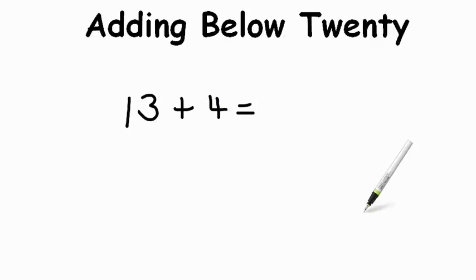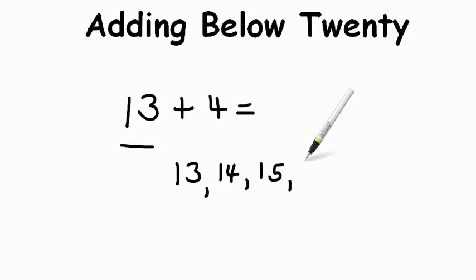We have 13 plus 4. So point to your screen and say to me what is the bigger number of those two? You're right. 13 is the bigger number. So let's count from 13 on to 4, plus 4. So 13, 14, 15, 16, 17. So our answer is 17. Nice job!